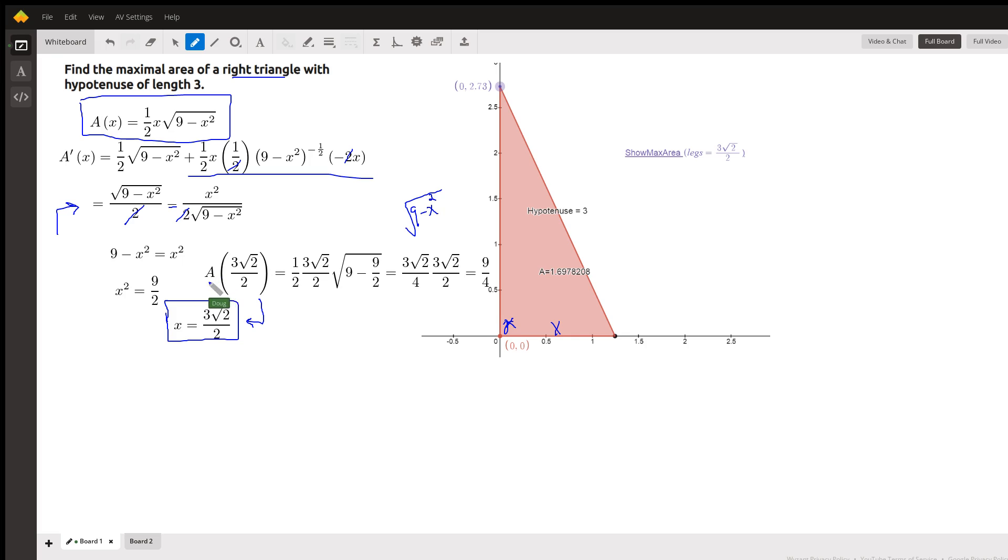Okay. So we'll leave that to the viewer. But if we want to find the maximum area, find A of three radical two over two. And it turns out, after all the simplification, it simplifies to nine fourths. That's your maximum area.